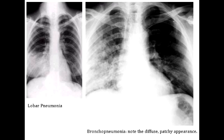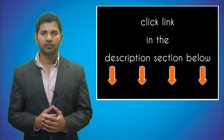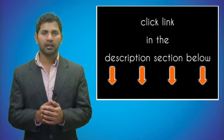A few additional pneumonias that fall under the bronchopneumonia category include aspiration pneumonia, which is caused by gram-positive or gram-negative anaerobes from the mouth, and ventilator-associated pneumonia, which occurs in intubated patients and is caused by Staph.